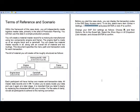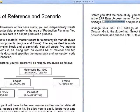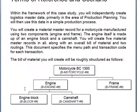First, we need to look at the business scenario for this case study. As you can see on the screen and in your notes, we need to create a master record for a motorcycle which uses two components: the engine and a frame. The engine itself is made of an engine block and a camshaft. So we will have to create five material master records in all, along with an overall bill of material and two routings. The bill of material shows the motorcycle as a finished product, composed of an engine and a frame, and the engine itself is composed of an engine block and a camshaft.